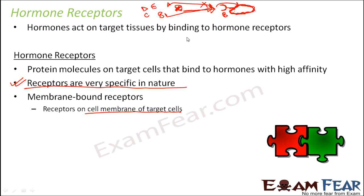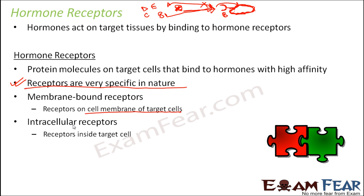If the receptor is present on the cell membrane of the target cell, they are called membrane-bound receptors — the hormone will bind to the receptor on the membrane itself. Intracellular receptors are present inside the target cell, rather than on the surface. We will see how the situation differs when a hormone binds to a membrane-bound receptor versus when it binds to an intracellular receptor.